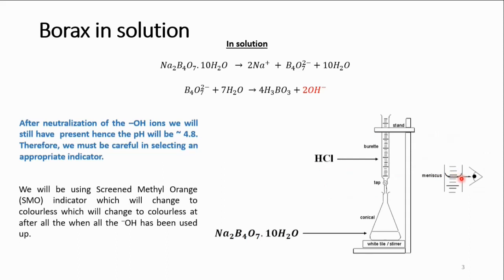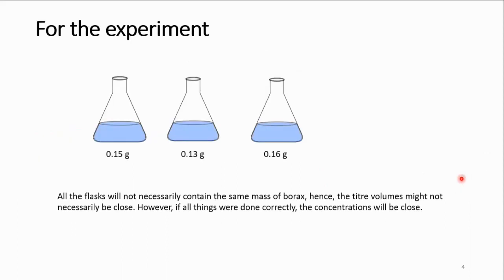Another thing that you should be aware of is that from your manual, the manual says, weigh accurately in triplicate, on an analytical balance of course, about 0.15 grams of borax into 150 cm³ conical flasks. So you have three conical flasks, and you want to get about 0.15 grams of borax in each of them.